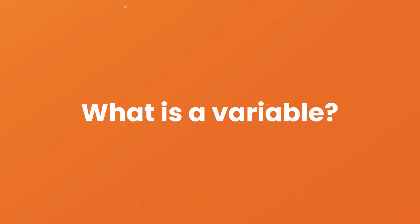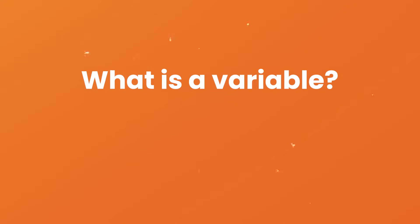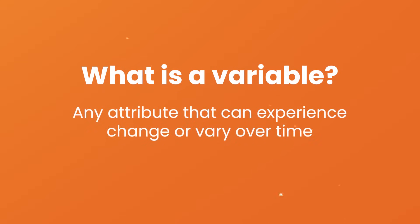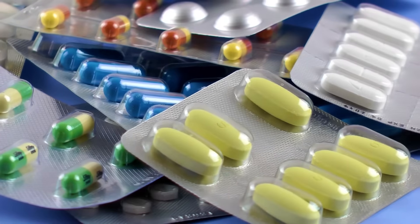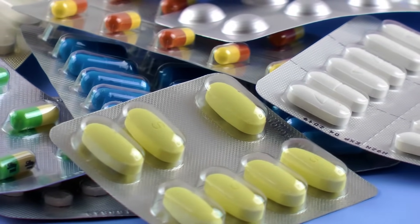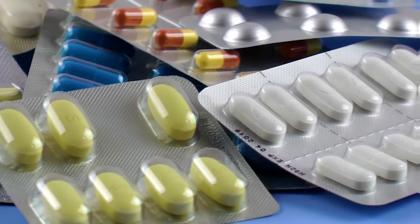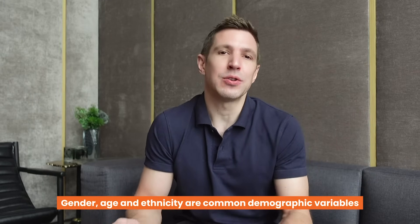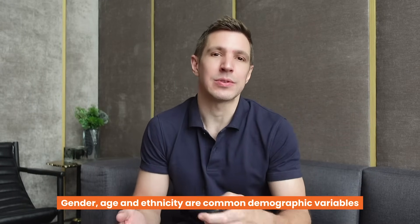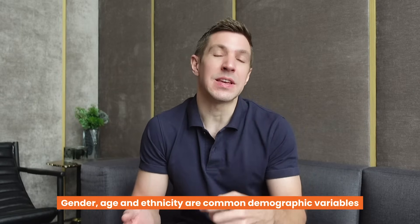So let's start by addressing the question: what exactly is a variable? At the simplest level, a variable is any attribute that can experience change or can vary over time — hence the name variable. For example, the dosage of a particular medicine could be considered a variable as the amount of that dosage can vary. Similarly, gender, age, or ethnicity could be considered demographic variables because each person varies in these respects. Research variables commonly form the focus within quantitative studies.